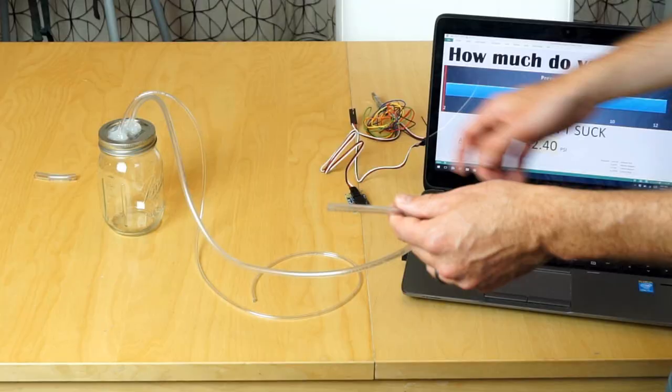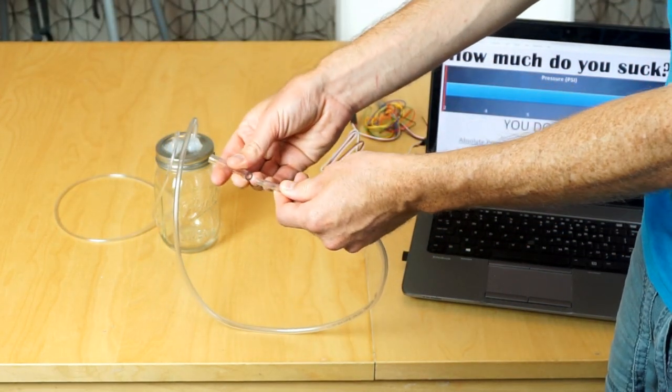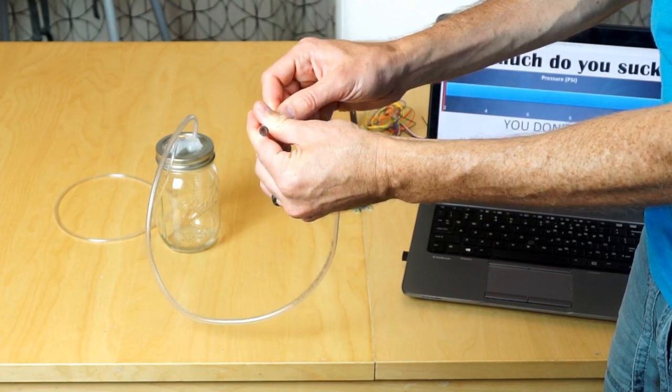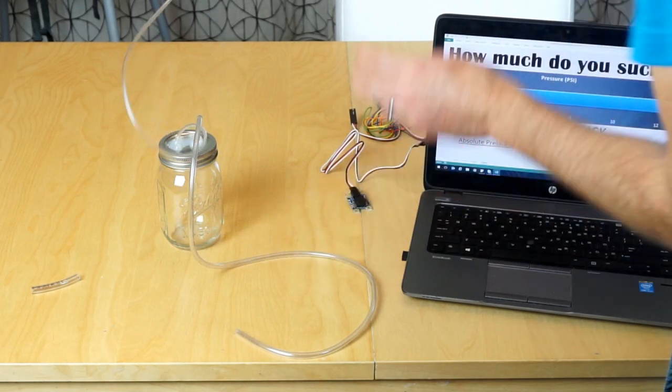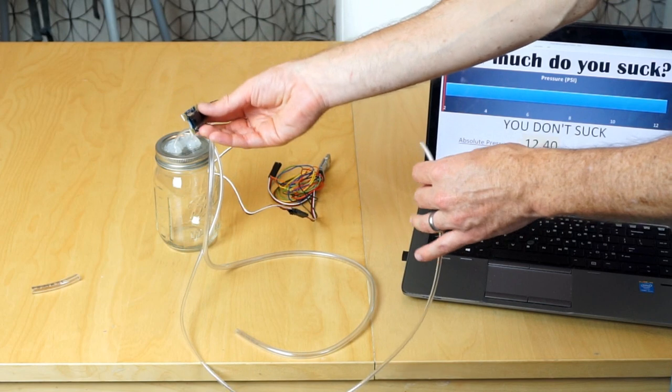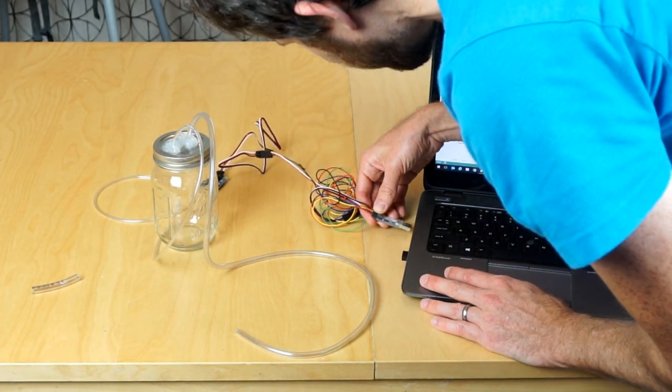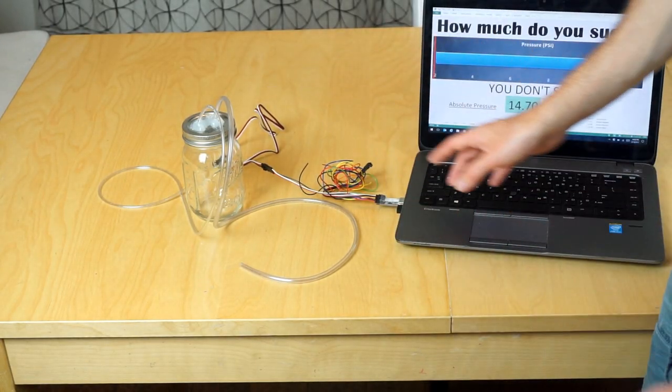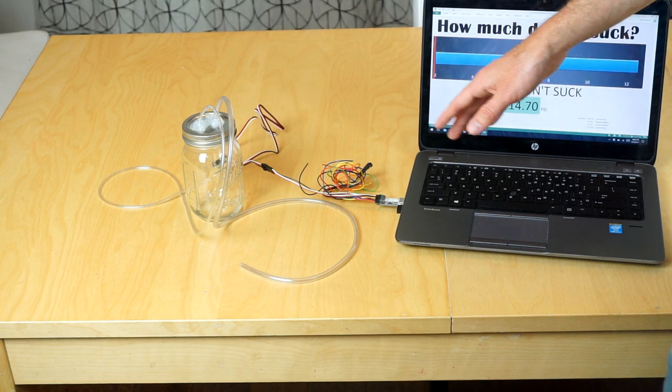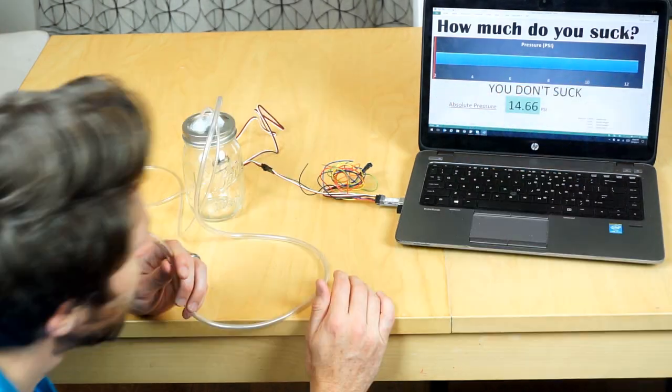Here's how this works: I have two tubes, this is the end that you suck on with a removable end so everybody doesn't have to suck on the same thing. It's connected to a bottle so there's a decent amount of volume that you have to suck out, then connected to a pressure sensor here, and my pressure sensor is connected to my computer. Right now I'm at atmospheric pressure, so this says around 14.7 psi.